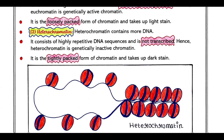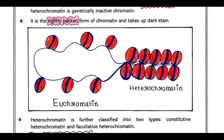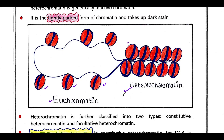You can see this image. Here are nucleosome structures, and in the case of euchromatin you can see the nucleosomes are placed far away from each other. But in the case of heterochromatin, the nucleosomes are closely placed.